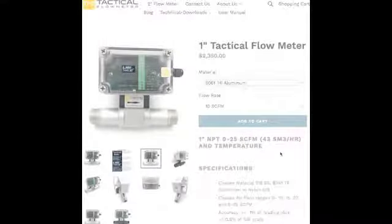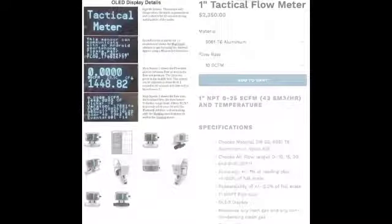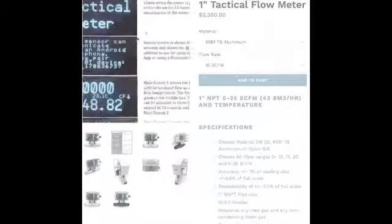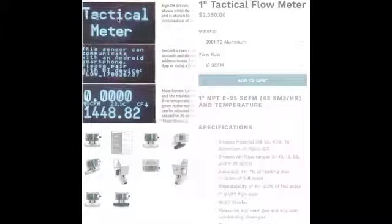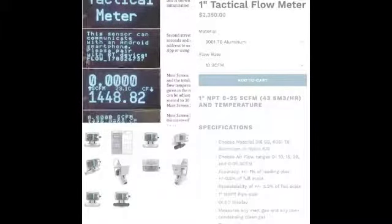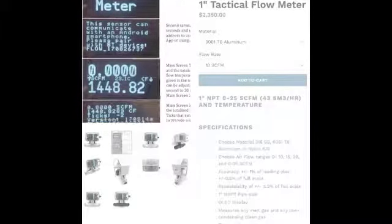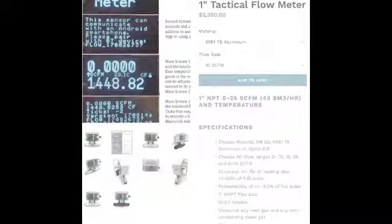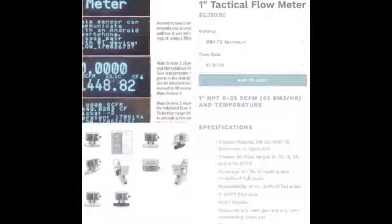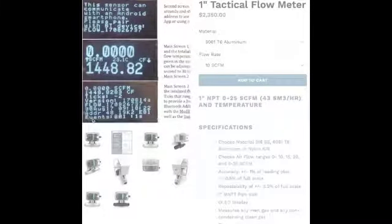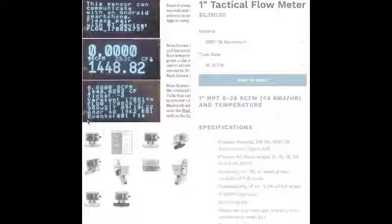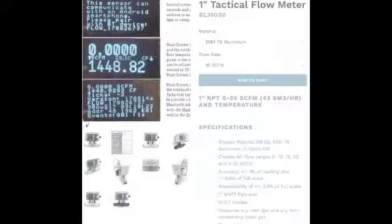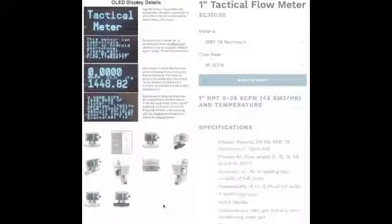Here is one exemplary flow meter and what its display looks like. The sign-on screen tells you what's going on — it shows the flow rate, total SCFM, temperature, cubic feet, and a number of other elements, including whether there is a data log.